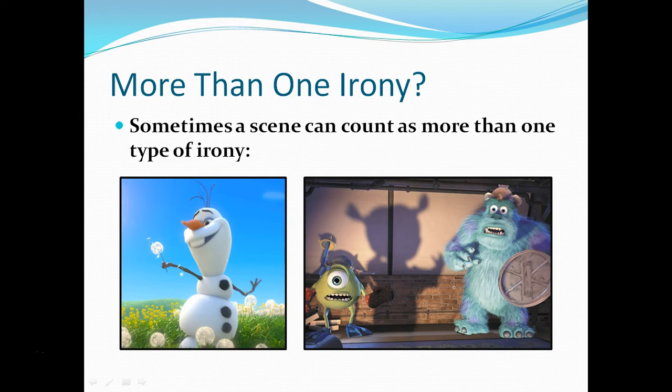It is possible for something to count as more than one type of irony. Sometimes a scene can show you various forms of irony, which makes it more connectable. In the song 'In Summer' from Frozen, there's situational irony because we have a snowman in the summer, which is bizarre, but it's also dramatic irony because the audience knows that if Olaf gets his wish to go into summertime, things won't go well for him. In Monsters Inc., the entire movie is situational irony — normally we expect the little kid to be scared by monsters, but the monsters are scared of the little kid. It's also dramatic irony because we as audience members know the monsters have nothing to worry about; they just think they do.